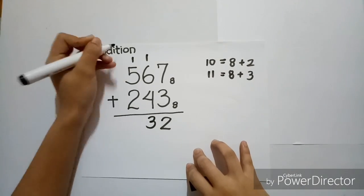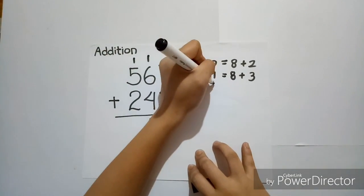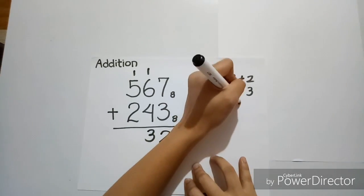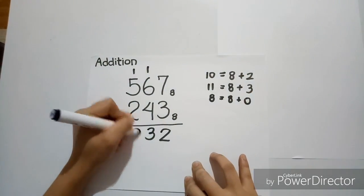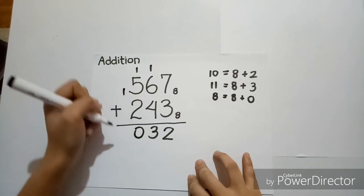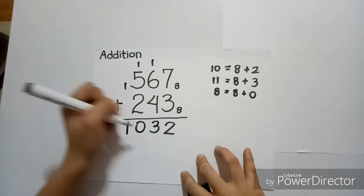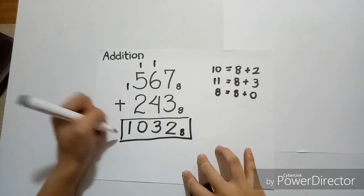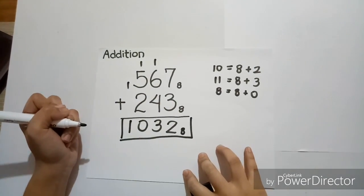Now, 5 plus 2 plus 1 is equal to 8, which is 8 plus 0. So, let's take 0, then carry 1. Then, let's bring 1 down, so we'll have the final answer, 1032 base 8.